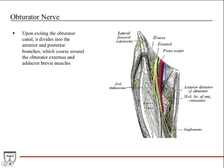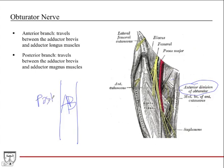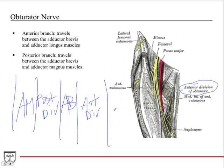Here's your adductor brevis; the longus is cut away. Here's the anterior division traveling here, posterior division traveling back. Just remember that it bifurcates and its two branches wrap around adductor brevis. The anterior branch travels between adductor brevis and adductor longus, and the posterior branch travels between adductor brevis and adductor magnus. Adductor magnus is back here, adductor longus is in front.